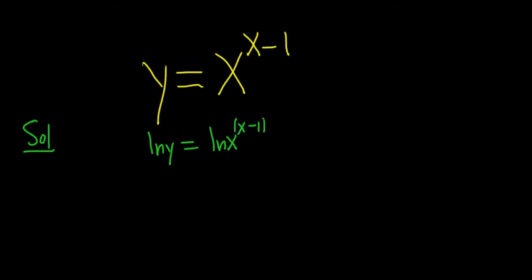Then you can use the power rule for logs to put this in the front. So this is the natural log of y equals x minus 1 times ln x.